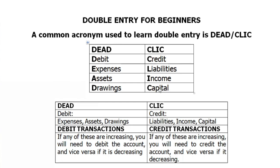When it comes to debit: expenses, assets, and drawings are debit transactions. If any of these are increasing, you will need to debit the account. Vice versa, if they are decreasing, you will credit the account. So we debit expenses, assets, and drawings whenever they are increasing.